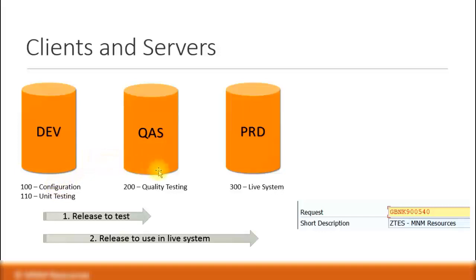Then after that, you can release the configuration to a quality assurance server, also called the quality testing server. In this server, the users can do testing and you can also carry out training. If everything passes, you can release it to the main live system — the production server. That is the purpose of having three different servers: one for configurations, another for testing, and the final one as your live system. This prevents doing any testing or configuration directly in the live system, so you do not disrupt normal proceedings.